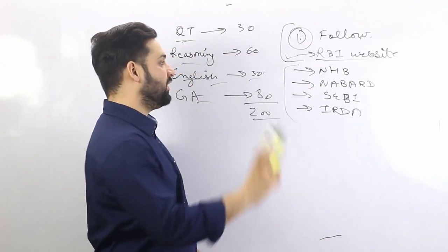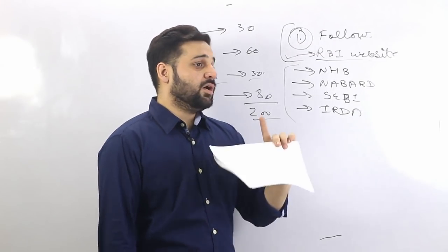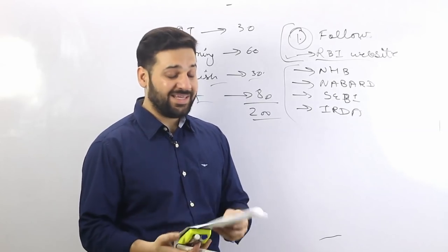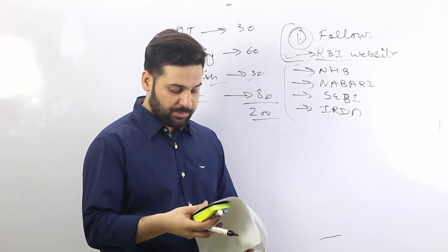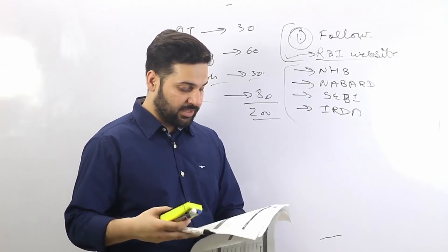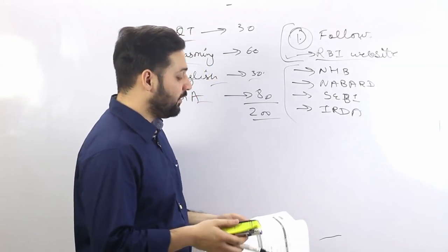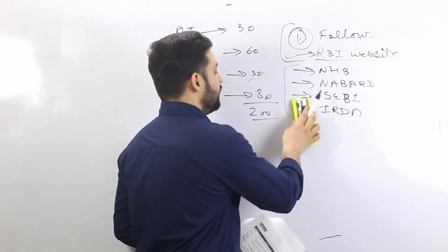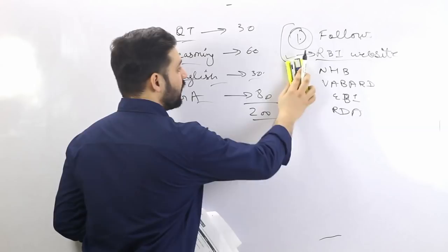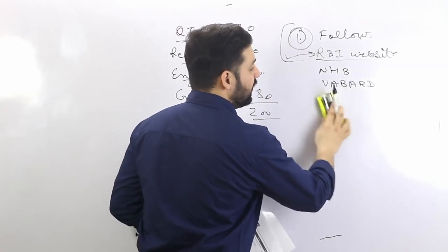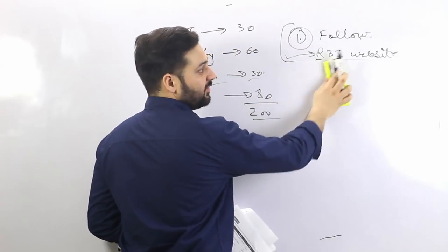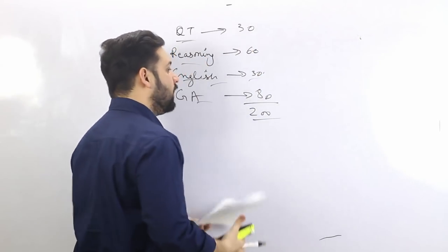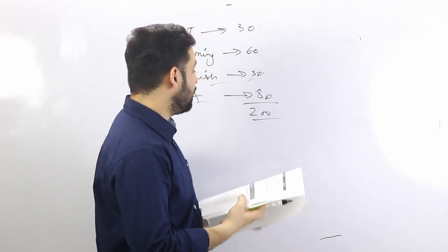To summarize the steps: step one is read the monthly GK Digest; step two is follow the official websites of RBI, SEBI, IRDA, and all those financial organizations. These are the two main steps.